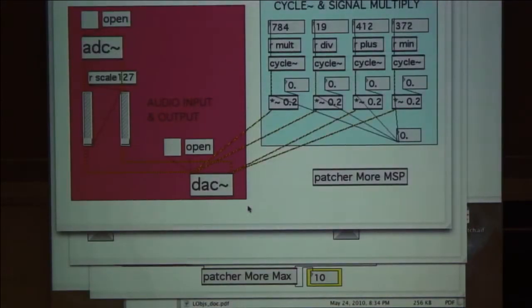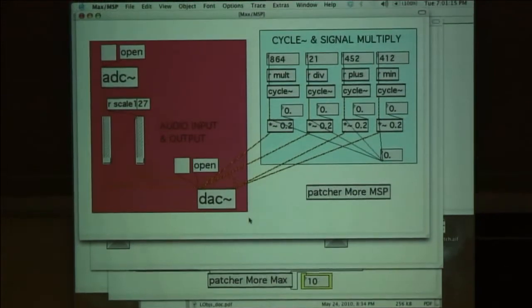Now we're going to go into the MSP part of things. First on the right hand side we have cycle and signal multiply. The MSP objects all have this little tilde character at the end of the title. So we have cycle and what cycle is is an oscillator. Cycle is an oscillator and it can use any frequency. You would then input the frequency into cycle and it will generate that tone. Right now we're taking, we're receiving the numbers from multiply, division, plus and minus. And we're going to turn those into frequencies. We haven't turned on the sound yet because we haven't gone over to the left part of our patch.